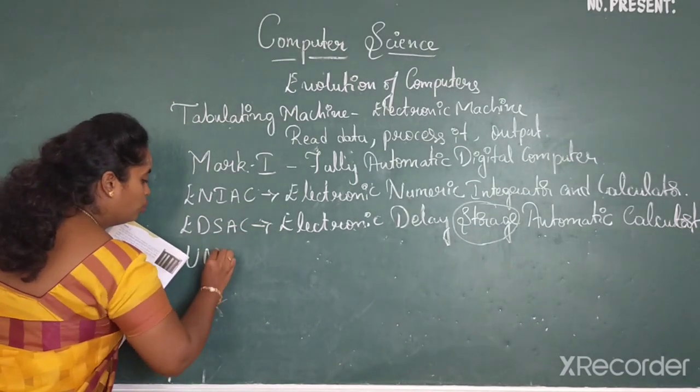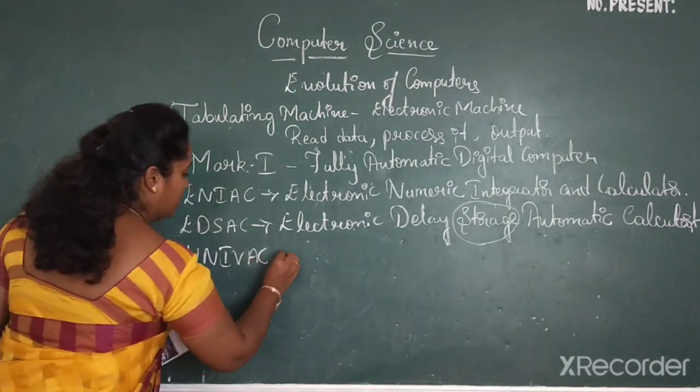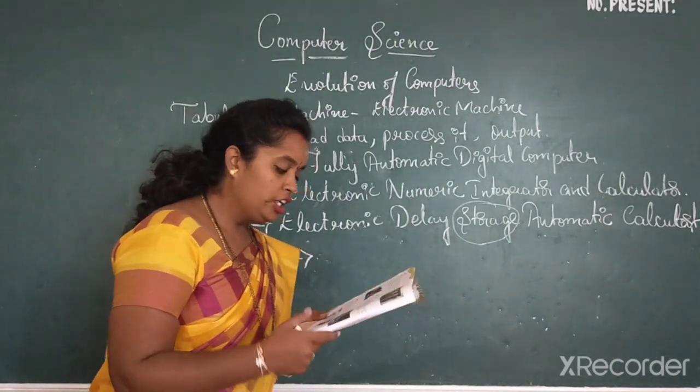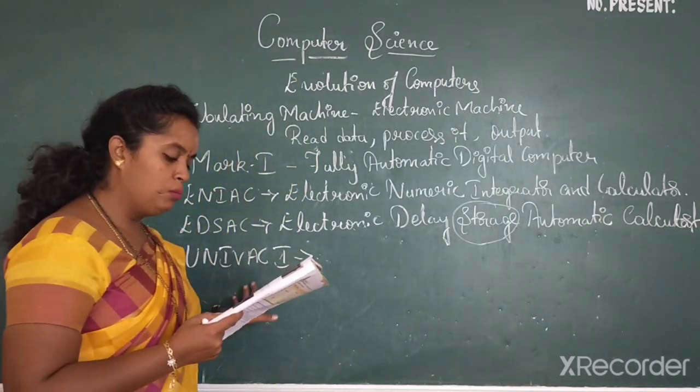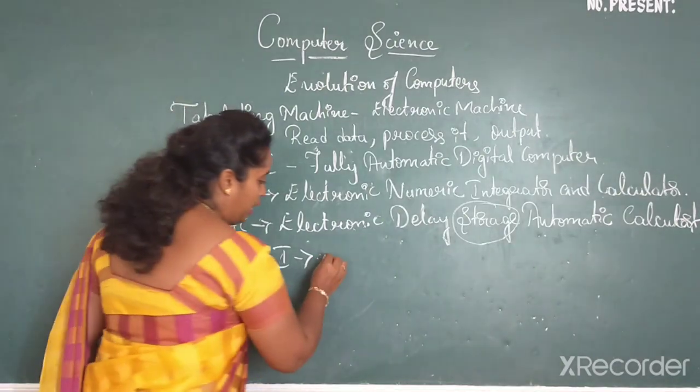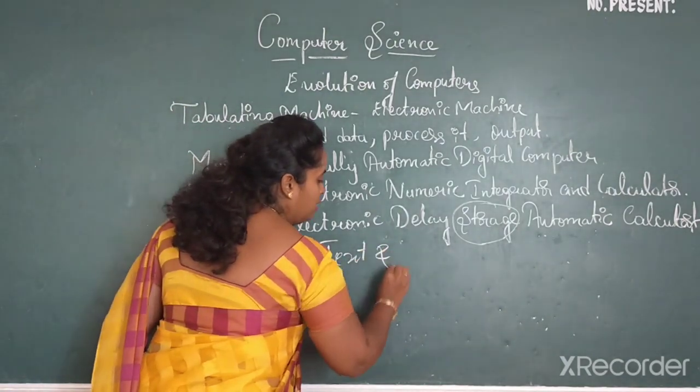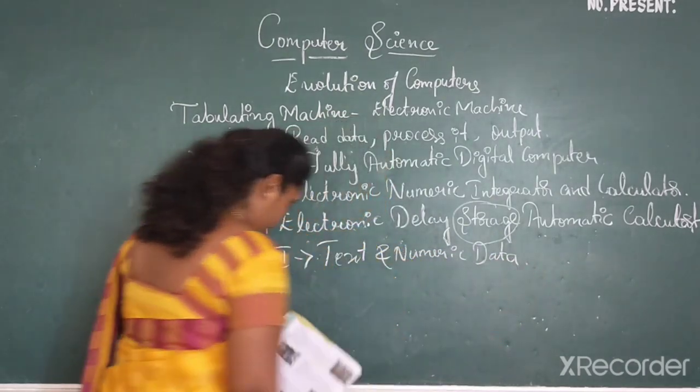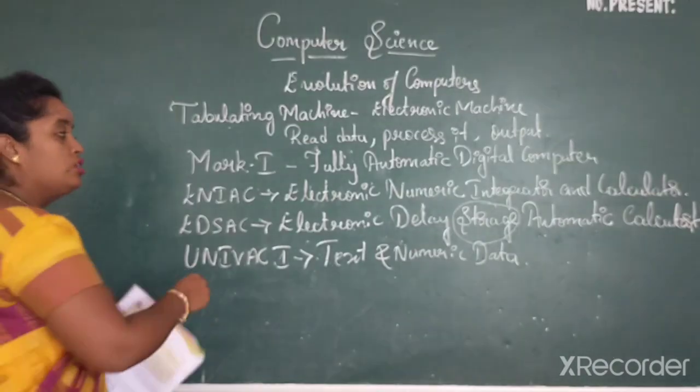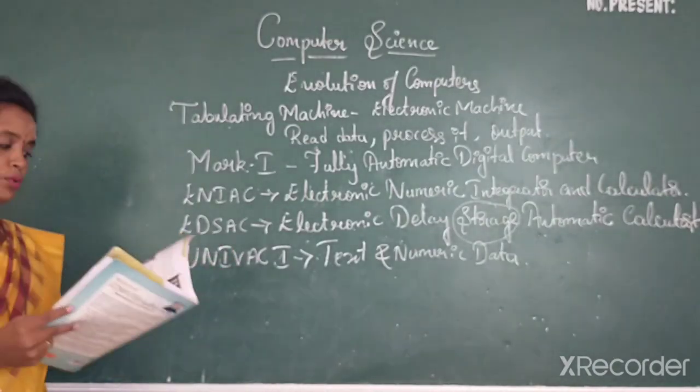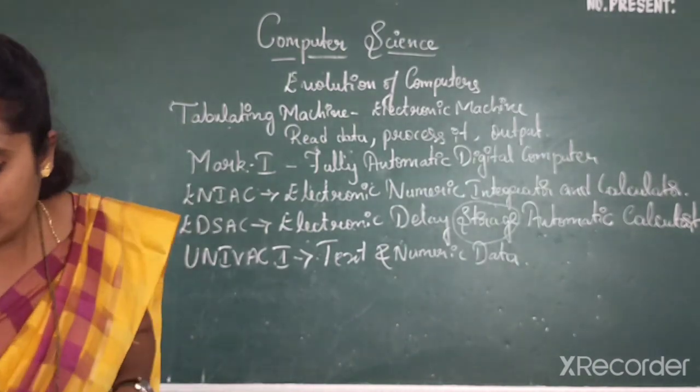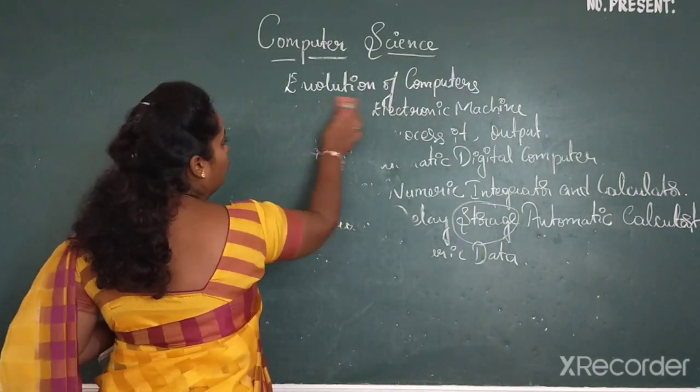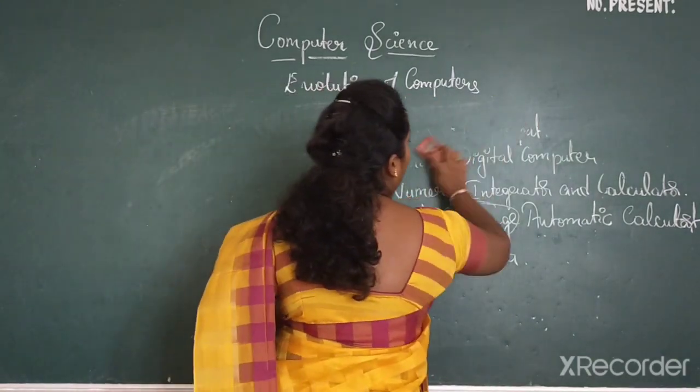Then UNIVAC 1. John Mauchly and Presper Eckert developed this machine. It was the first electronic computer to handle both text and numeric data. So these are the different types of computer where the evolution took place. Then moving on to your generation of computers.